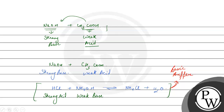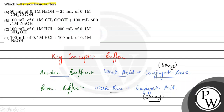Hence, our correct option is C: 100 ml of 0.1 molar HCl and 200 ml of 0.1 molar NH4OH. Hope you understood it well — best of luck!